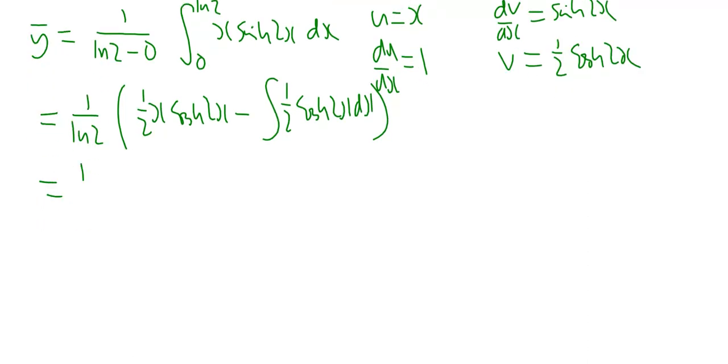You can then integrate that, so 1 over ln2 into, I'm going to put square brackets now, so a half x cosh 2x is already integrated, minus, if you integrate a half cosh 2x, you get a half times a half, which is a quarter sinh 2x between ln2 and 0.